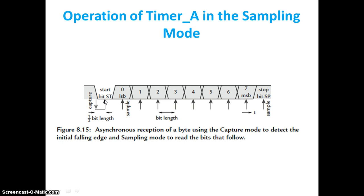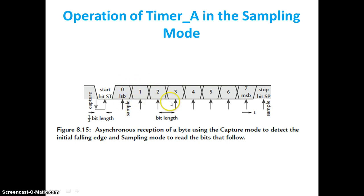Initially, Timer A is put in capture mode for a falling edge. Once the falling edge is detected, the timer is switched to compare mode. In compare mode, the timer count is set to half the bit length — this places the comparison point in the middle of the start bit. In the interrupt service routine, when that compare event fires, we check the input value. If it is exactly zero, asynchronous communication has started. If not, the system is pushed back to capture mode.